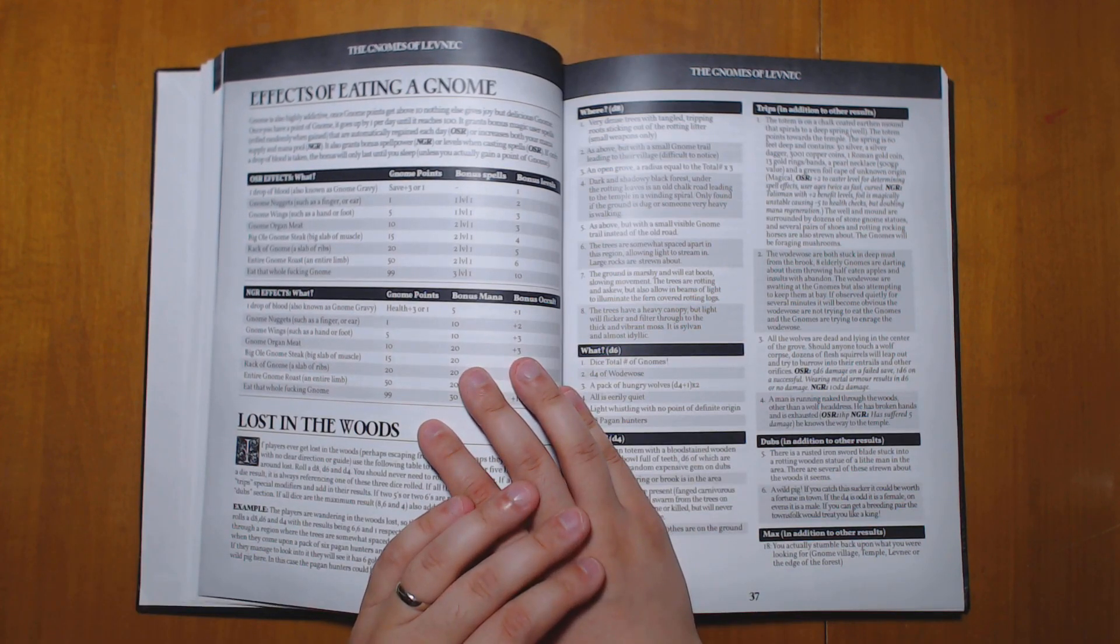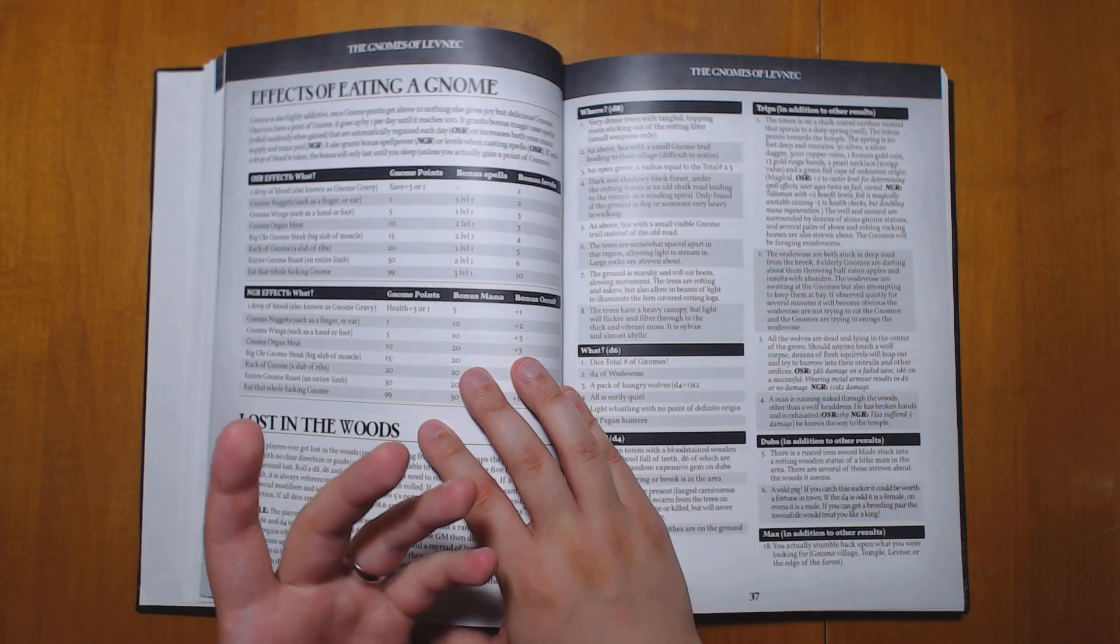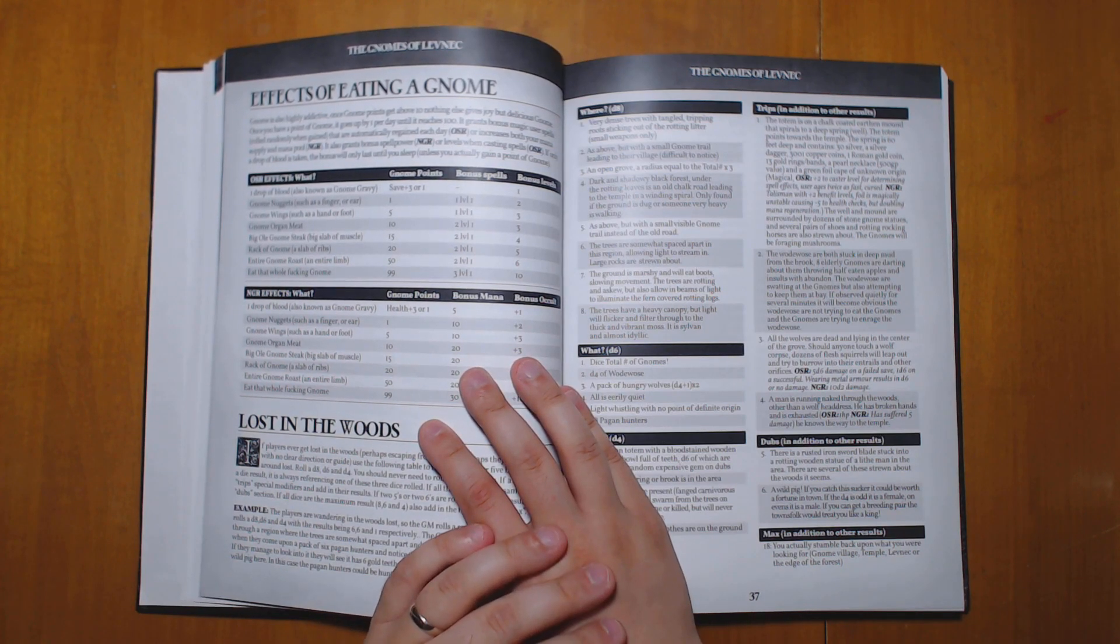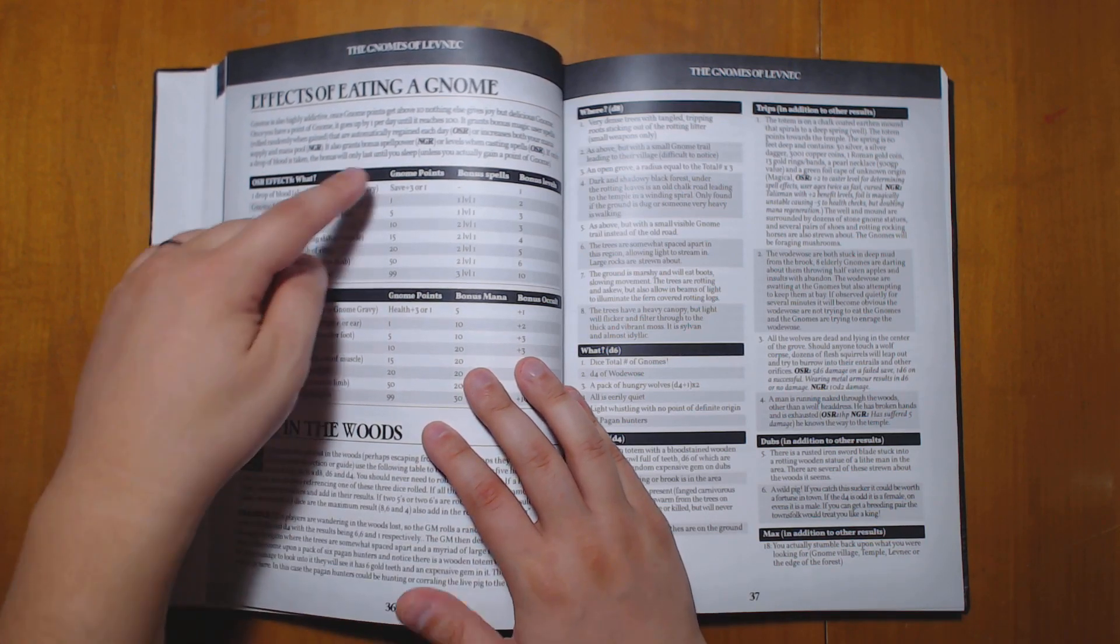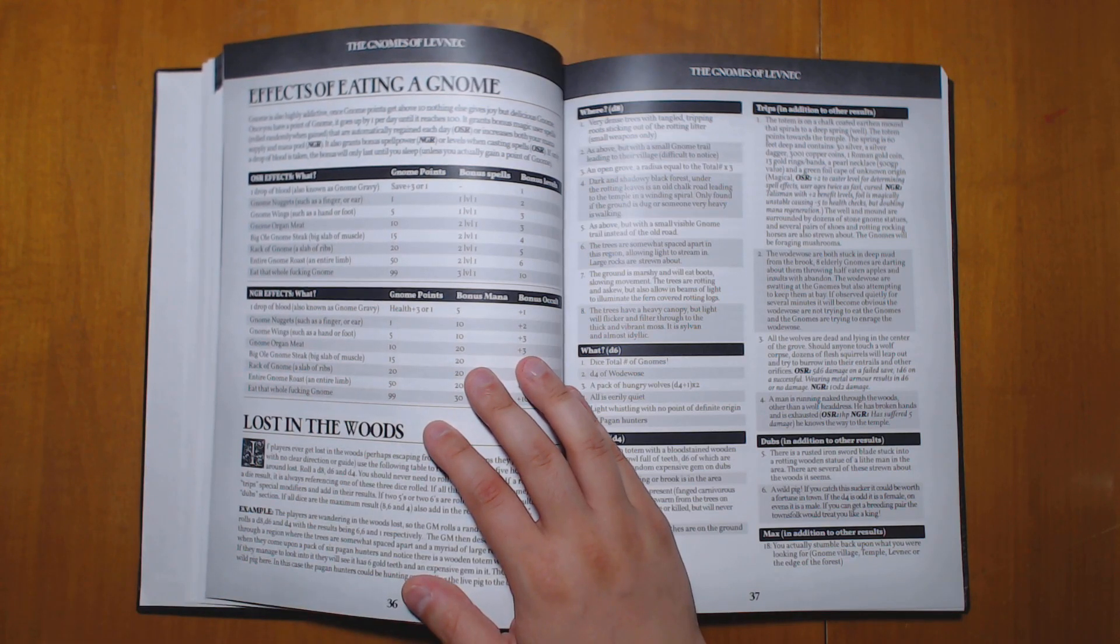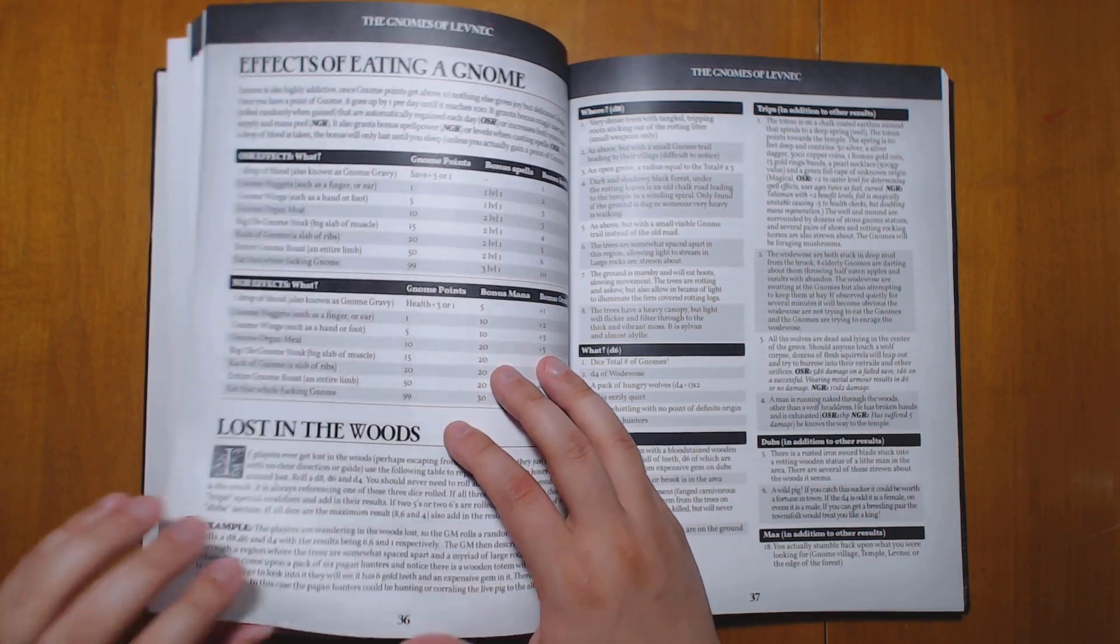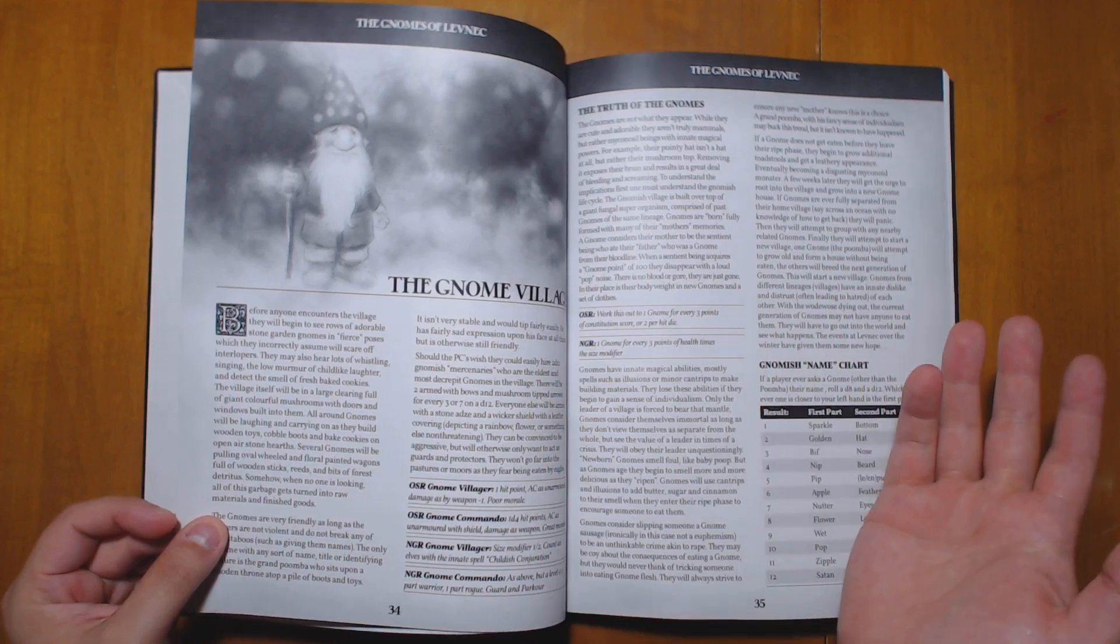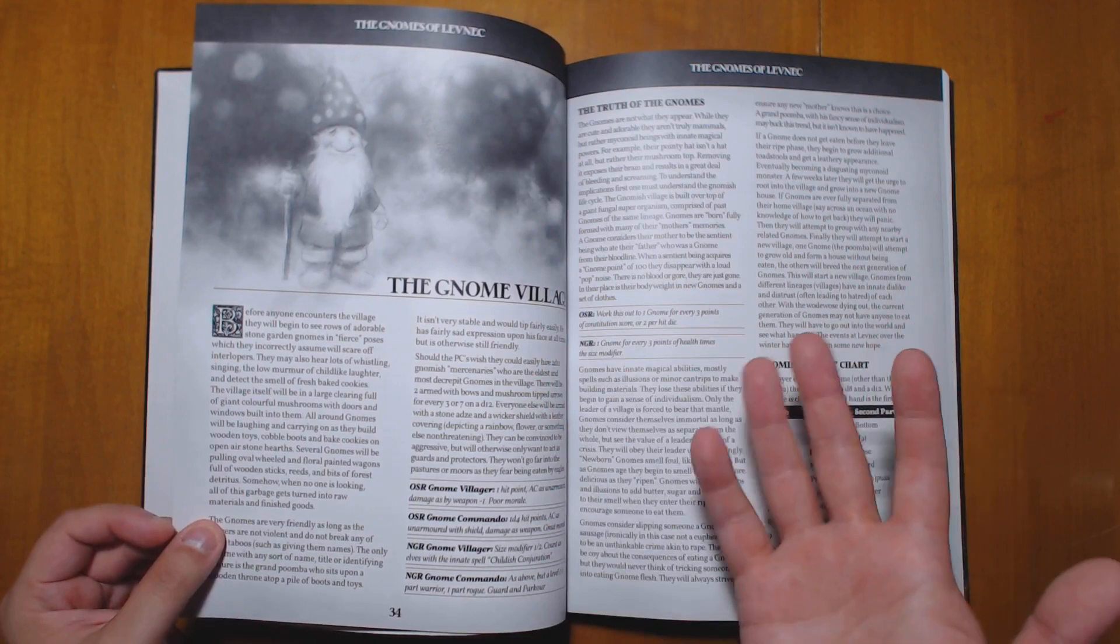Basically, the twist in this one is that the gnomes want to be eaten. Part of their lifestyle, or their life cycle, is that as they get older, they get increasingly delicious. And at a certain point, they need to be eaten. And if someone does eat them, then they will start acquiring gnome points. And when you get enough gnome points, you just explode in a puff of smoke, and your body weight in new gnomes appears. And the gnomes aren't like little hobbits. They're basically like garden gnomes, which I think is the best way to do gnomes. They're basically humanoids that are also funguses. Like, that's not a hat. That's actually part of their head.